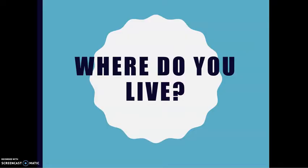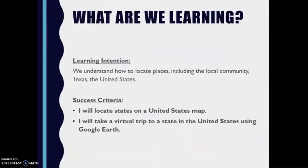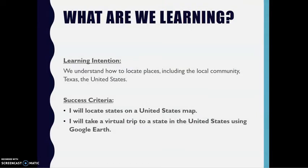Where do you live? What are we learning? Learning intention: we understand how to locate places, including the local community. Success criteria: I will locate states on a United States map, and I will take a virtual trip to a state in the United States using Google Earth.